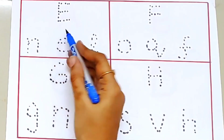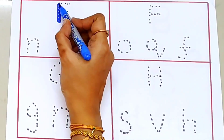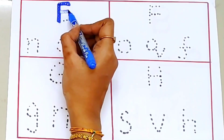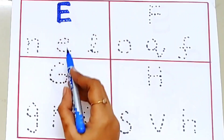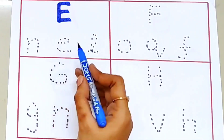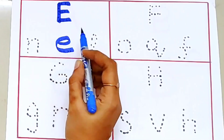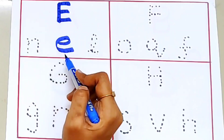E. Capital E. E for egg. Small e. Capital E. Small e.